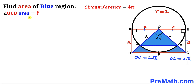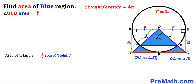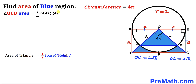Now we calculate the area of big right triangle OCD. Using area = ½ × base × height, the base OD = 2√2 and the height = 2√2. So the area = ½ × 2√2 × 2√2 = ½ × 8 = 4. The area of triangle OCD is 4 square units.